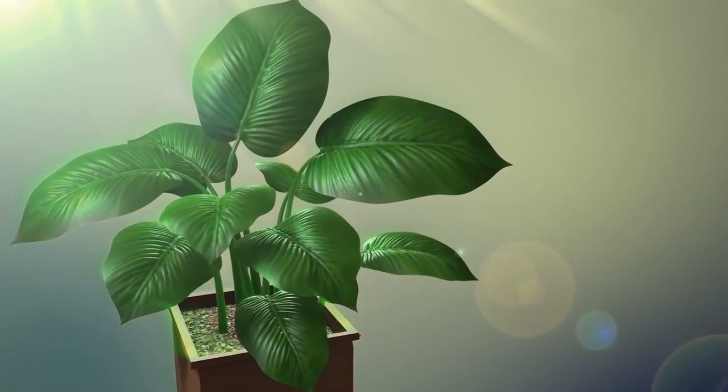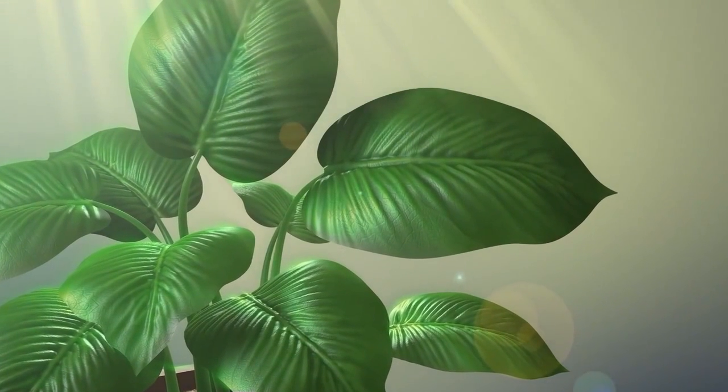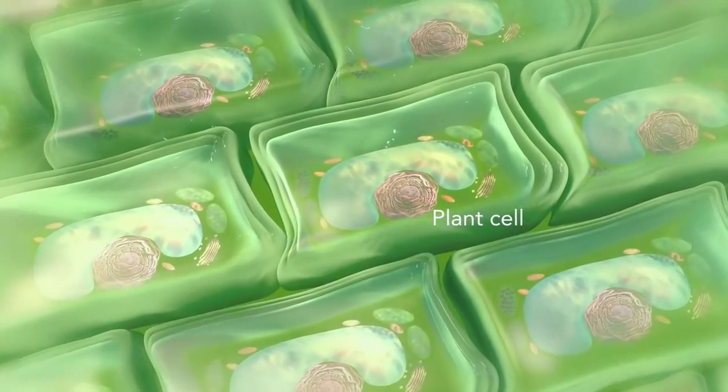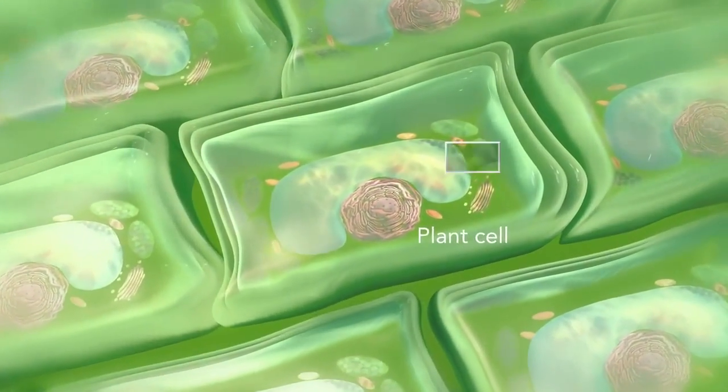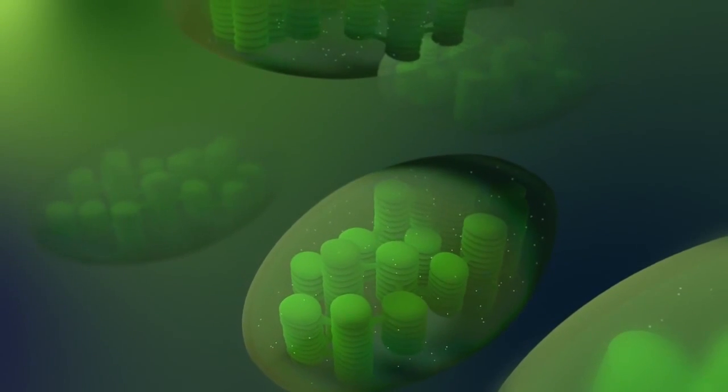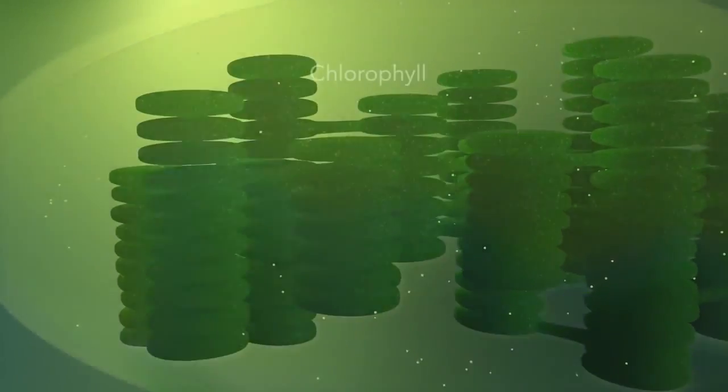Some organisms, such as plants that are photo-autotrophic, meaning they capture sunlight for energy, have cells with an organelle called a chloroplast. The chloroplast is where photosynthesis happens. It's green because it has a green pigment called chlorophyll.